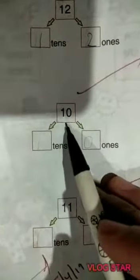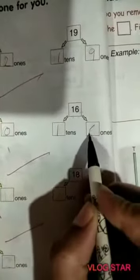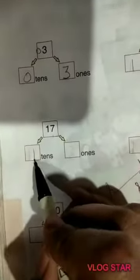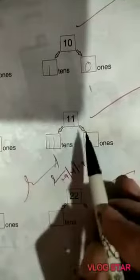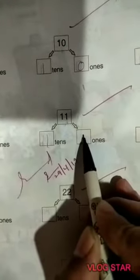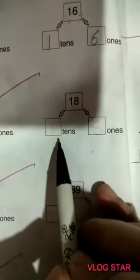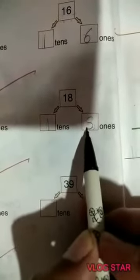It's a number 10. We have to divide it into two parts. One is one tens and zero ones. It is number 16. One is one tens and six is six ones. It's a number 17. One is one tens and seven ones. It's a number 11. One is one tens and one is one ones. Number 18. One is one tens and eight is ones.